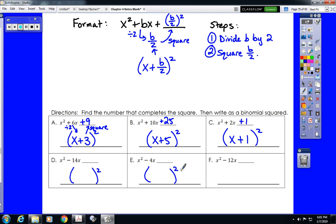Now, the same thing applies when b is negative. That doesn't change anything. So negative 14 divided by 2 is negative 7. Negative 7 squared is still positive 49. So it doesn't matter whether this number is negative or positive. This number is always positive.